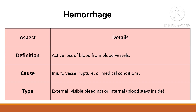Hemorrhage can be caused by trauma, infections, or underlying medical conditions like hypertension or clotting disorders. It can present as visible bleeding such as from a wound or a nosebleed, or as internal bleeding which is not immediately visible.